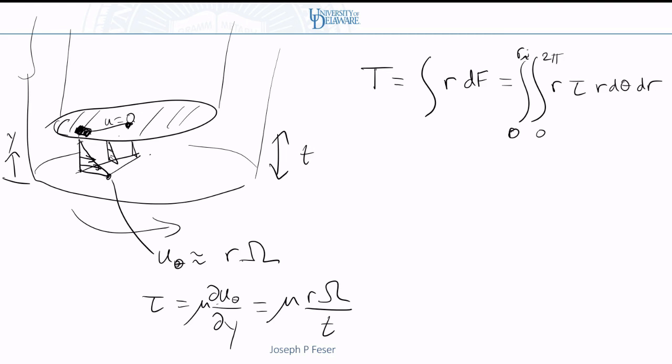There's no dependence on theta, so you can actually integrate that right away. So that's actually two pi times r squared tau dr from zero to ri, but then we've already shown that tau itself depends on r as well. I can kind of see right away that I'm going to end up with something that has r squared, so I'm going to need to integrate r cubed, which is r to the fourth over four, so this is going to turn out to be ri to the fourth over four times mu omega divided by t.